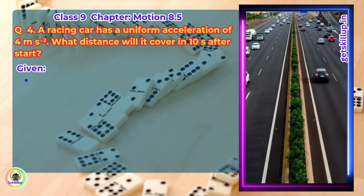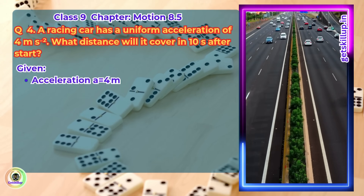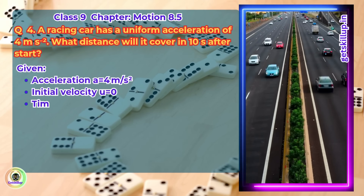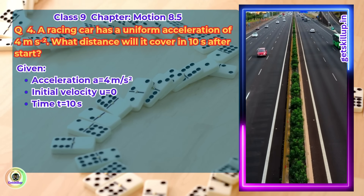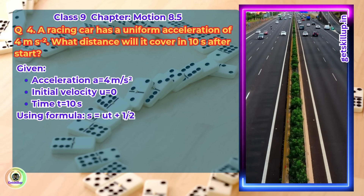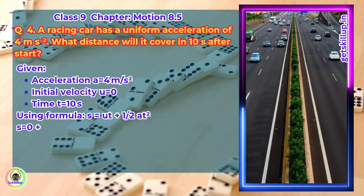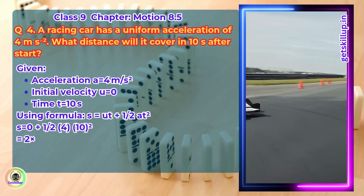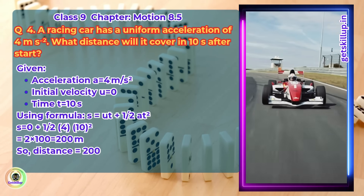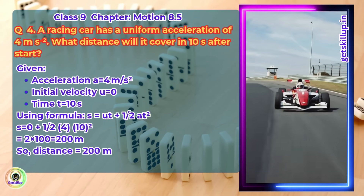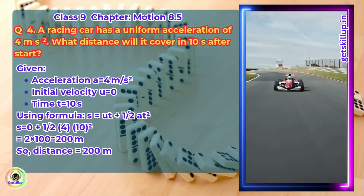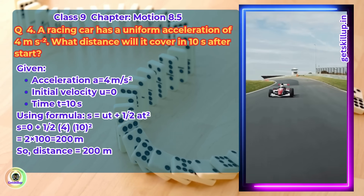Answer. Given: acceleration a equals 4 meter per second square, initial velocity u equals 0, time t equals 10 seconds. Using formula s equals ut plus half at squared: s equals 0 plus half of 4 into 10 squared, which is equal to 2 into 100, which is 200 meter. So distance equals 200 meter.